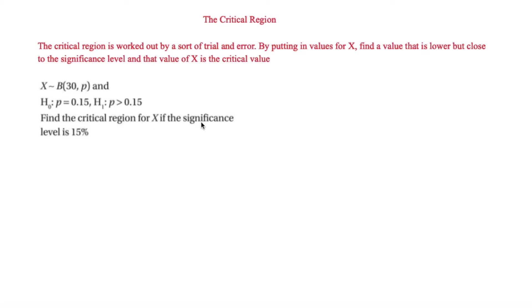Find the critical region for x if the significance level is 15%. We'll start off by wondering what it would be if x is more than or equal to 8. We're looking at a rough estimate — if p has increased from 0.15, the value would be fairly high. If we did 30 × 0.15 we would expect around 4.5, so 8 seems a decent place to start.